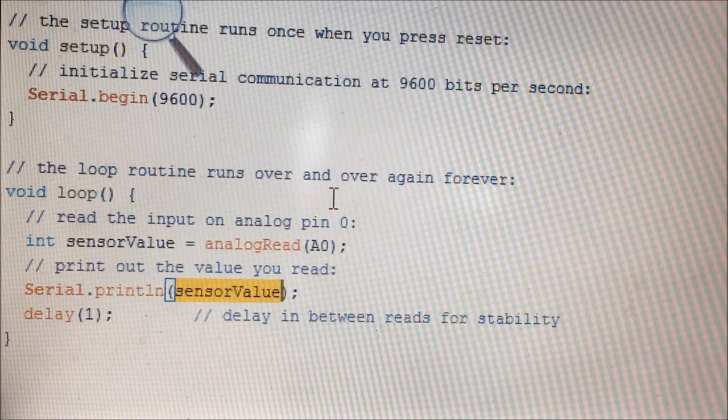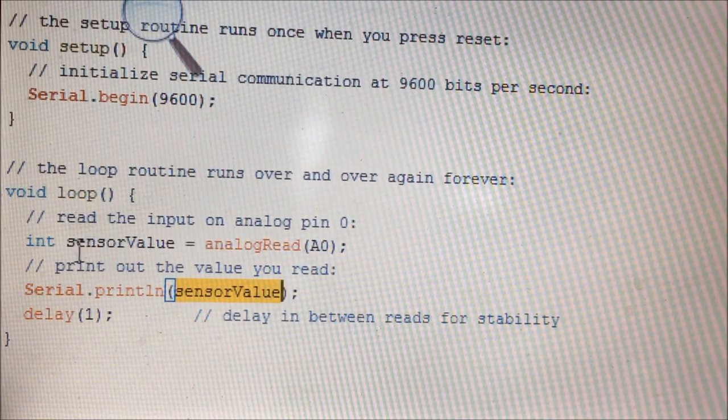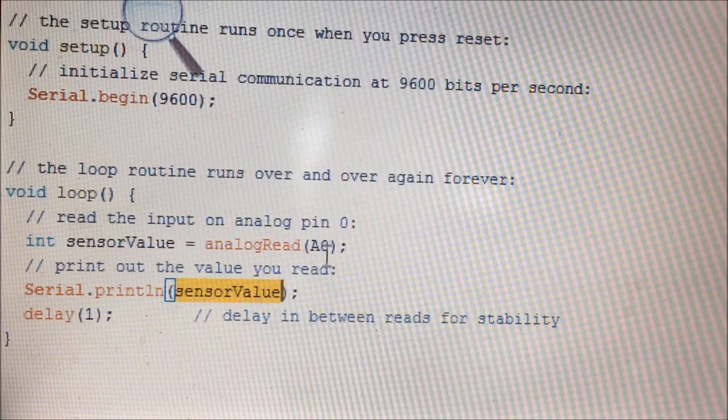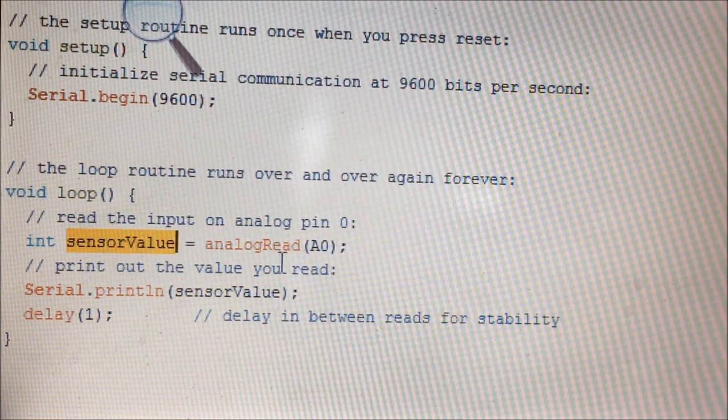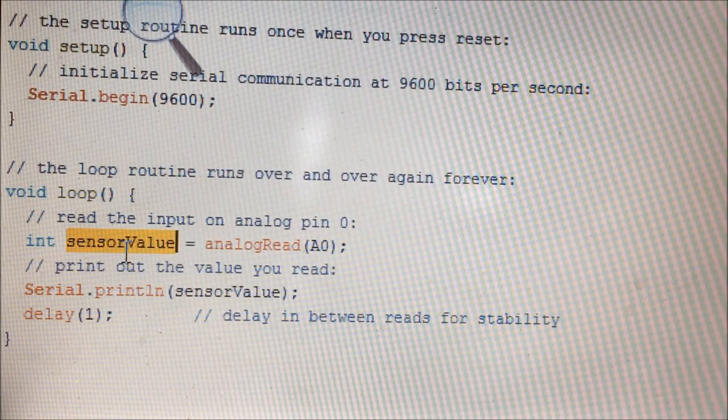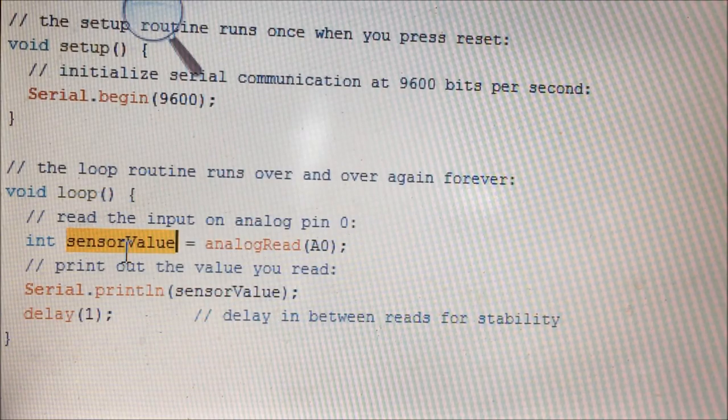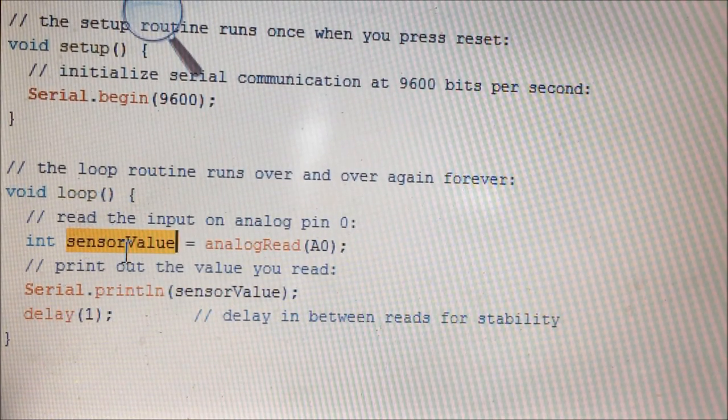So if you want to connect up and down also, you have to connect it to another sensor channel, let's say A1 or A2 or A3. You can define one more variable like sensorValue1 and you can analogRead that channel output to the sensor value, and then you can print the same sensor value. So that you will get both the left-right readings and the up-down readings.